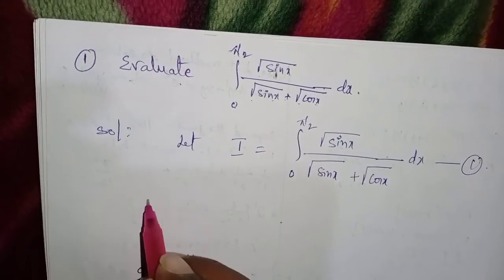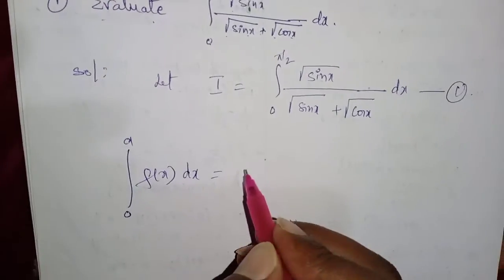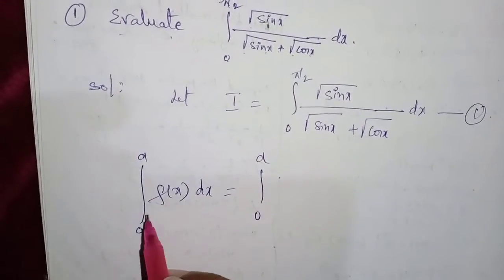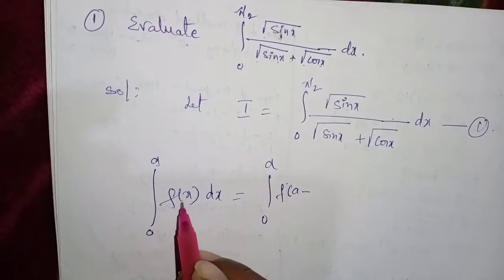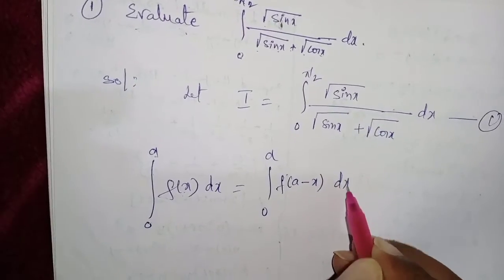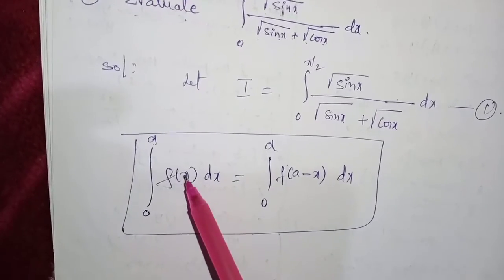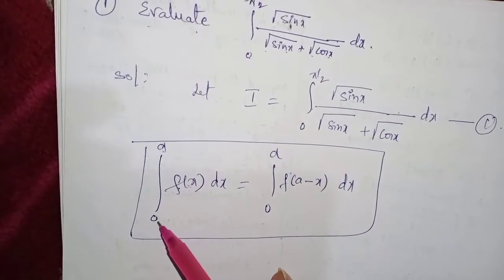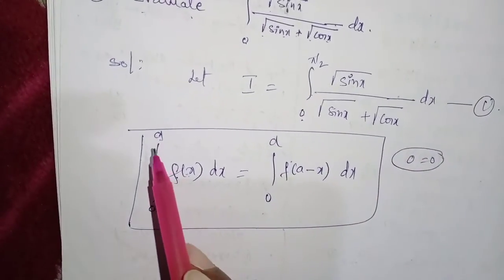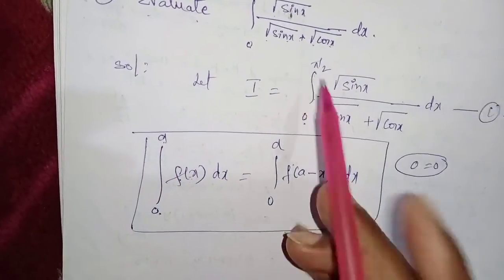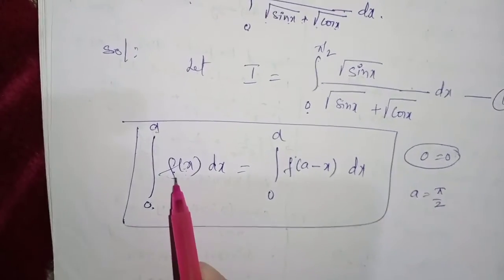We know the definite integral property: ∫₀^a f(x) dx = ∫₀^a f(a − x) dx, where the limits remain the same but x is replaced by (a − x). Comparing with our integral, the lower limit is 0 and the upper limit is π/2, so a = π/2.